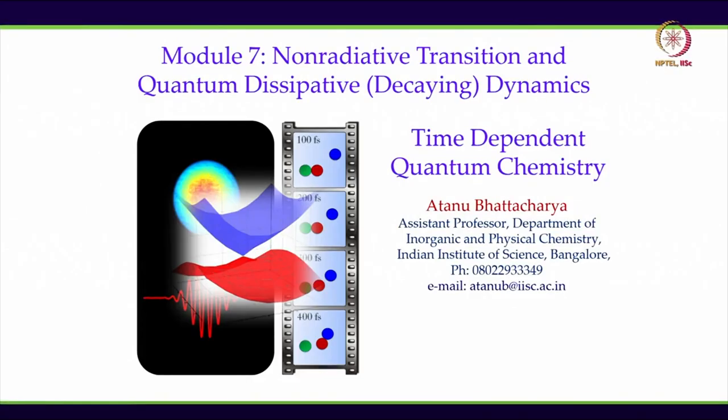Welcome to module 7 of this course on time-dependent quantum chemistry. In this module we will go over non-radiative transitions using time-dependent perturbation theory. In earlier modules we have seen several approximate methods such as time-dependent perturbation theory and adiabatic theory. Here we will see the application of first-order time-dependent perturbation theory to explore non-radiative transitions, and how this leads to Fermi's golden rule for non-radiative transitions.